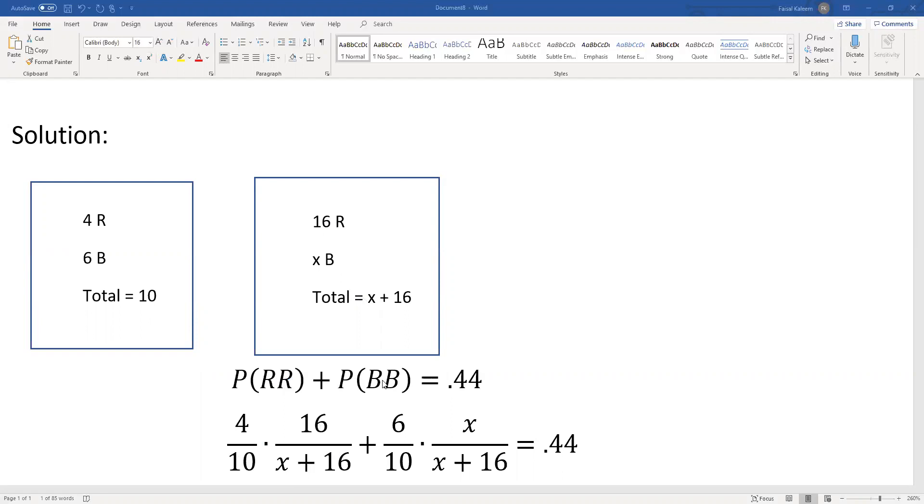And then both blue: first blue would be 6 out of 10, second blue would be x out of x plus 16. So this sum equals 0.44.